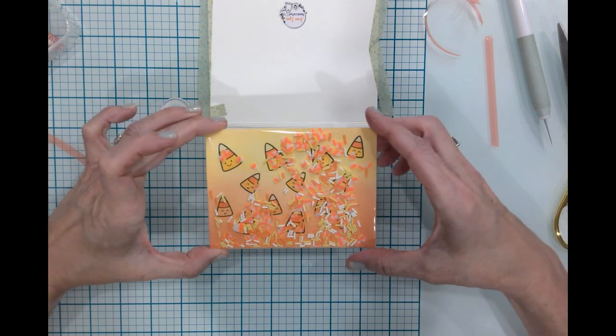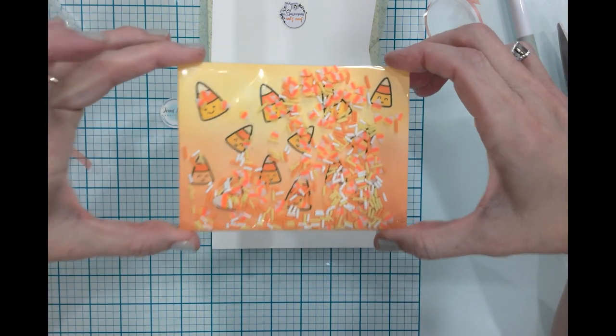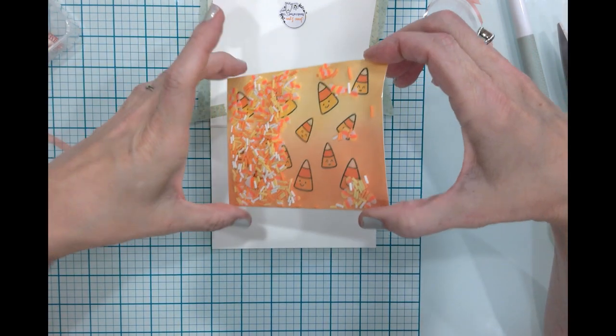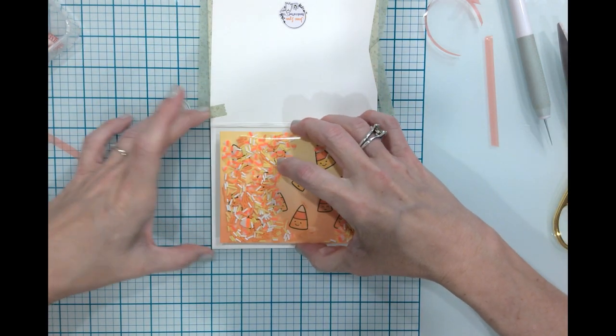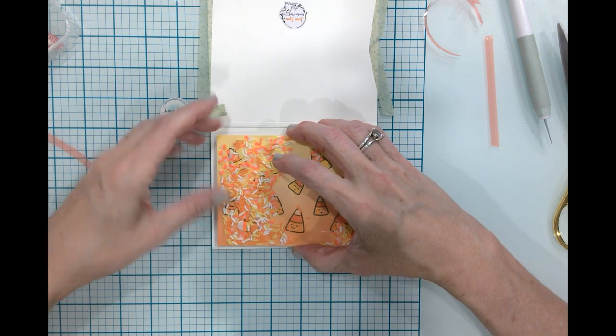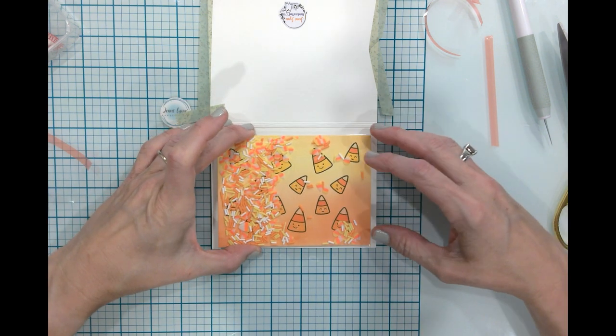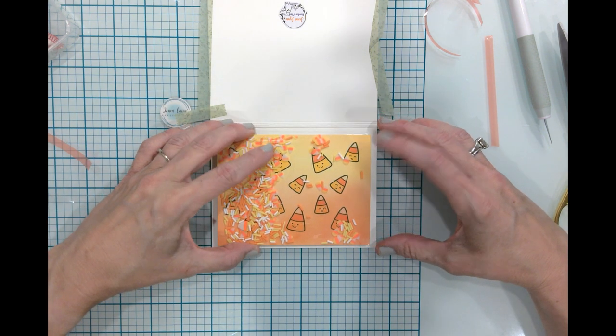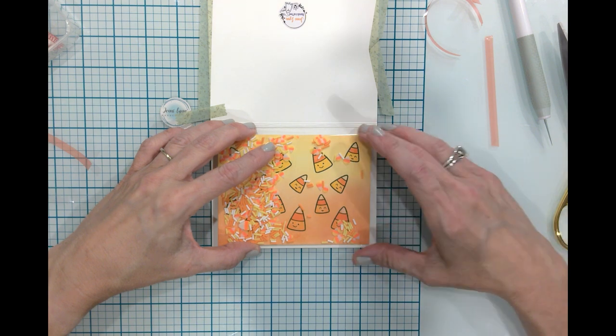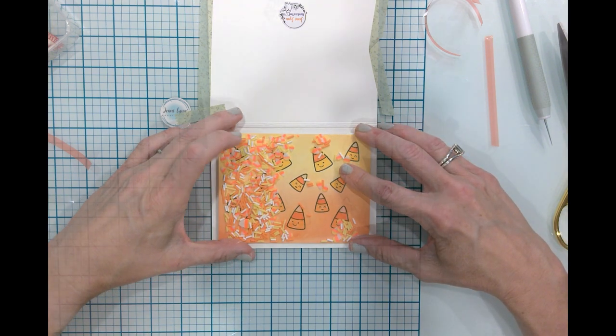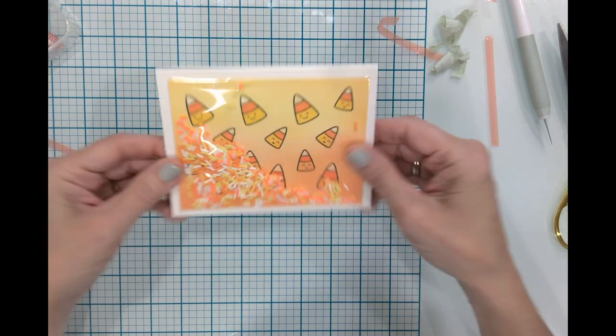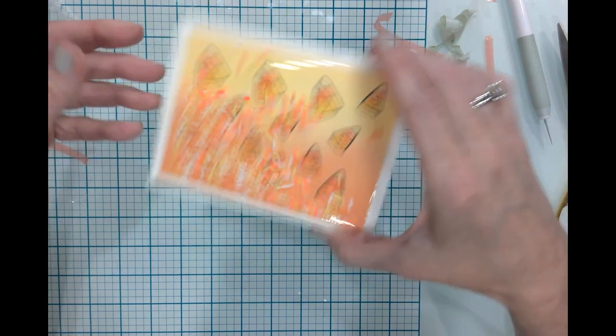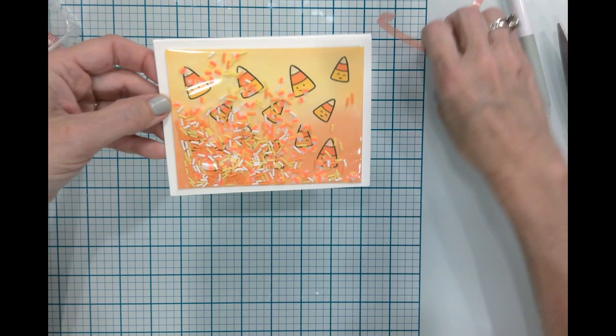So now I'm going to make sure it's going the right orientation. This was an A2 size panel, four and a quarter by five and a half, and I have trimmed it down so that I could get a white border. So I took off about an eighth of an inch all the way around. Now we have our little shaker.